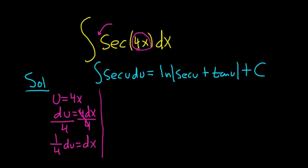Now all we have to do is make the substitution. So dx is one-fourth du. You can pull out the one-fourth from the integral, and then you have secant of u du.